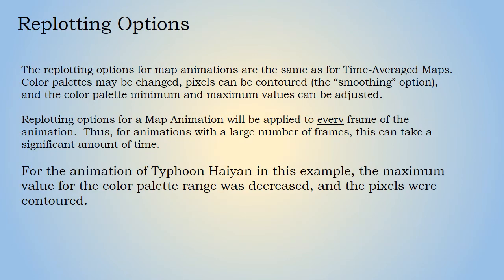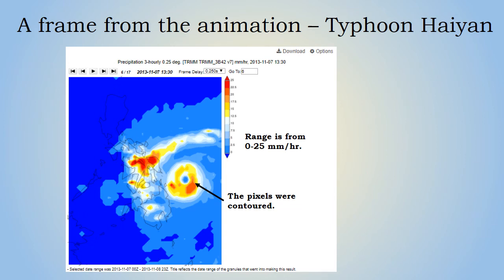The replotting options for map animations are the same as for time average maps. Color palettes may be changed, pixels can be contoured, the smoothing option, and the color palette minimum and maximum values can be adjusted. Re-plotting options for a map animation will be applied to every frame of the animation, so for animations with a large number of frames, this can take a significant amount of time. For the Typhoon Haiyan animation, the maximum value for the color palette range was decreased and the pixels were contoured. Here is a frame from the animation when the eye of the typhoon was particularly well formed; the maximum value was set to 25 millimeters per hour.